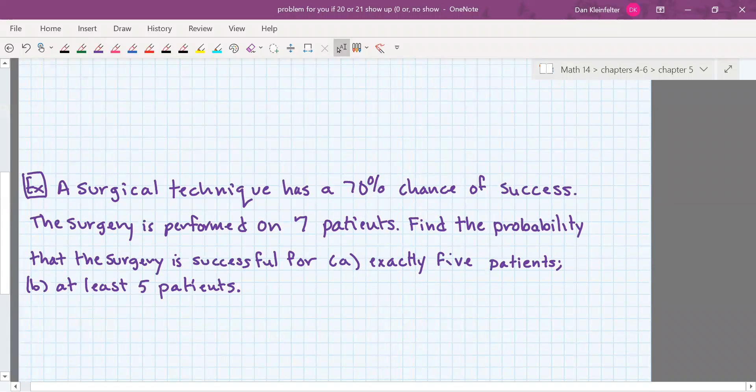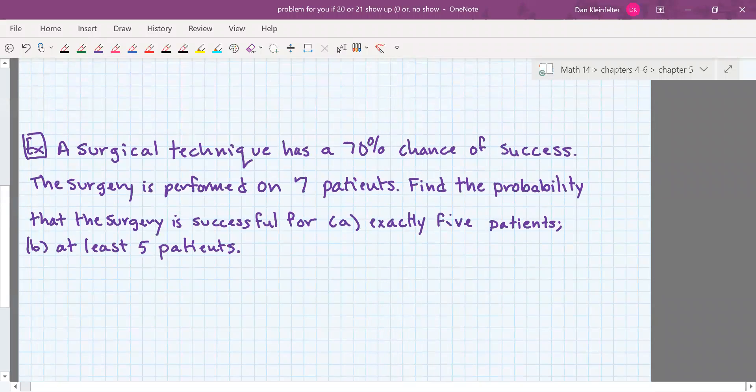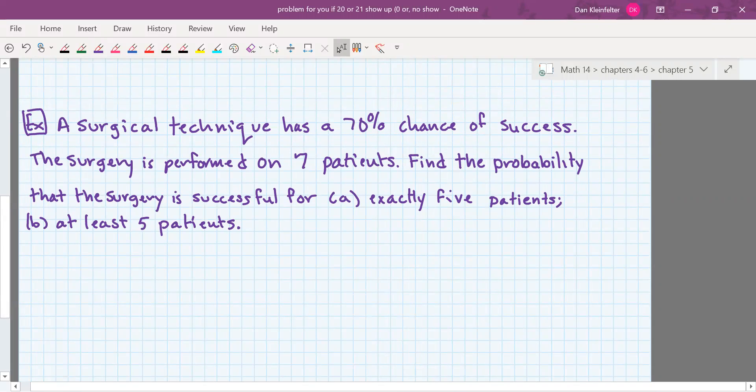Okay. So one more example. So here it says a surgical technique has a 70% chance of success. The surgery is performed on seven patients. We want to know the probability that the surgery is successful for exactly five patients and then at least five patients. So for exactly five patients, out of seven surgeries, we're looking for five to be successful. It has a 70% chance to be successful for any one surgery. We need that to occur five times. If the success rate is 70% and the failure rate is 30%, that needs to occur for the remaining two cases.